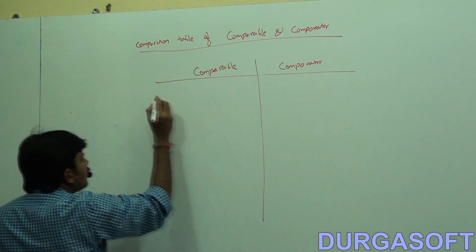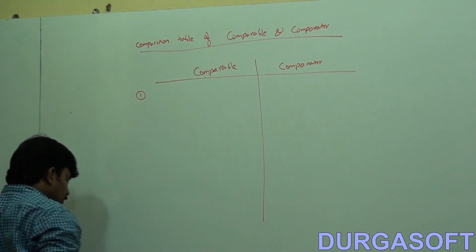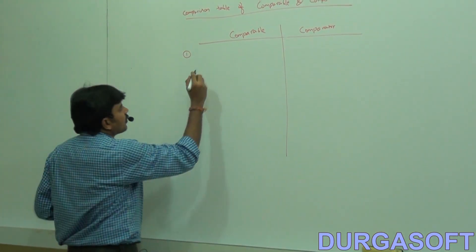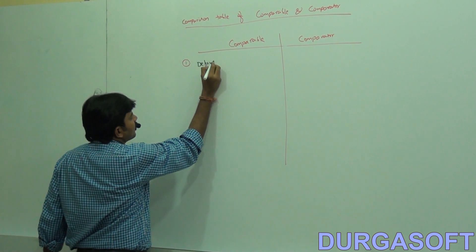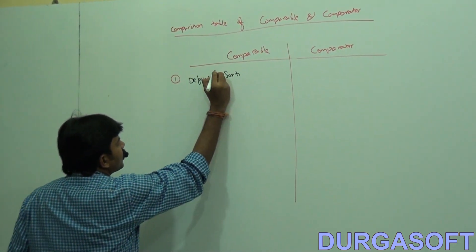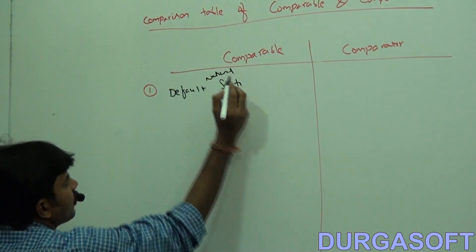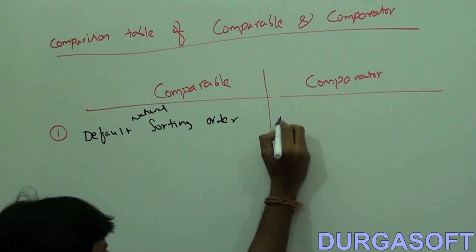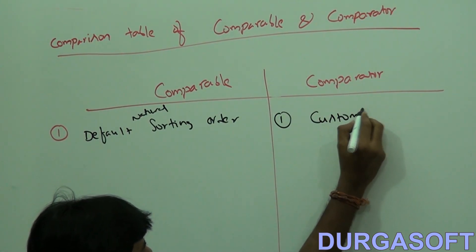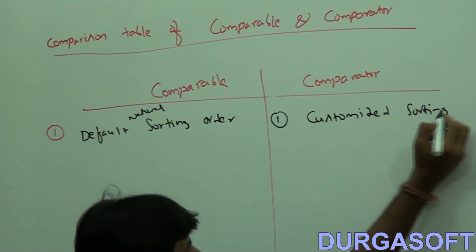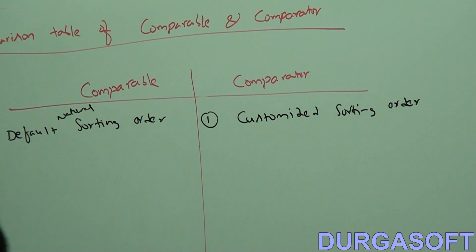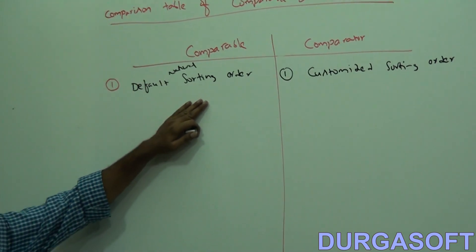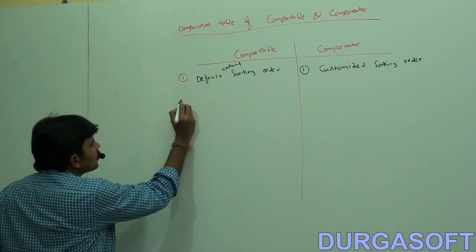Looking at the comparison table, the first point about Comparable: it is meant for default natural sorting order. Comparator is meant for customized sorting order. We have concluded this point several times — Comparable is for default natural sorting order, Comparator is for customized sorting order.